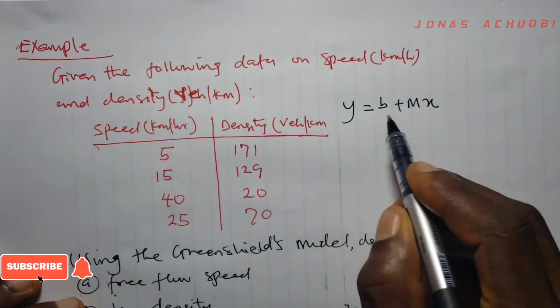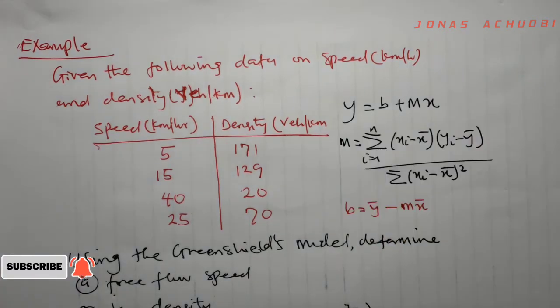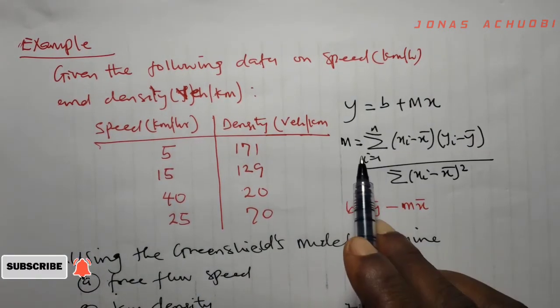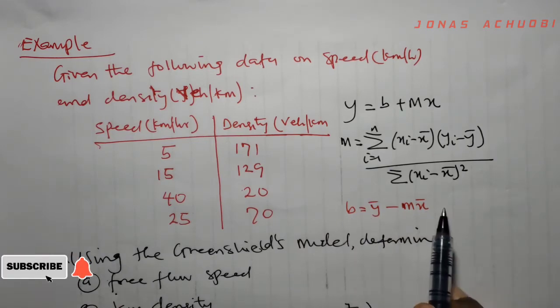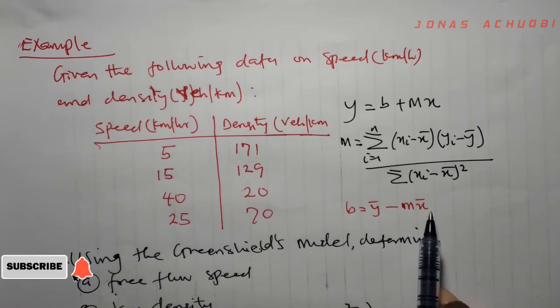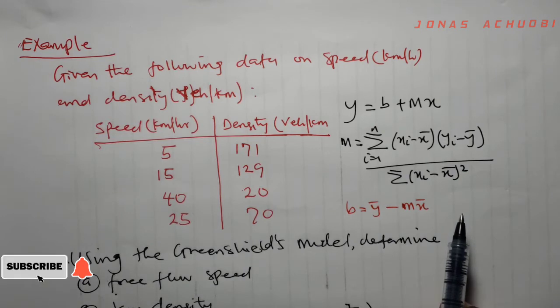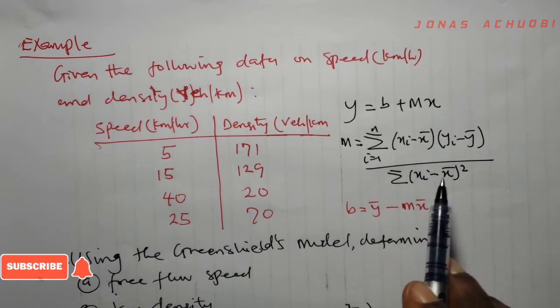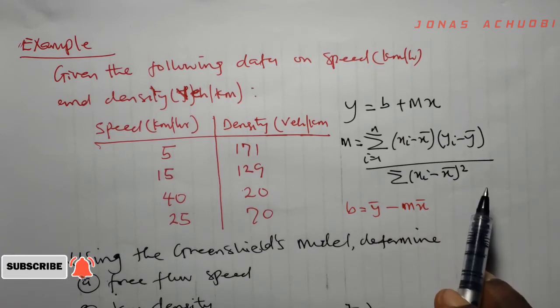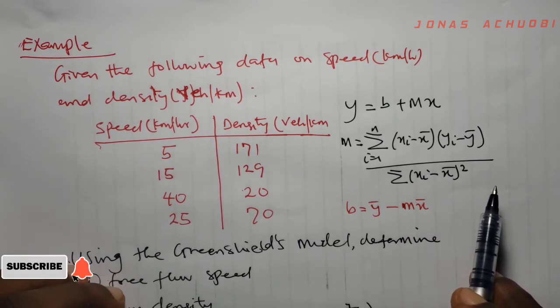Where the parameters b and m can be obtained as follows: m is given by this formula and b is given by this formula y bar minus m x bar. Where xi and yi are the samples and n is the number of samples, then x bar and y bar are the means of the samples xi and yi respectively.